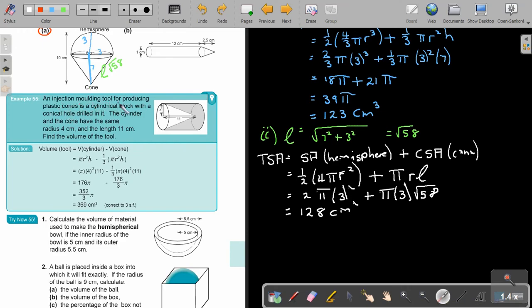An injection molding tool for producing plastic cones is a cylindrical block with a conical hole drilled in it. The cylinder and the cone have the same radius, 4, and the length is 11. Find the volume of the tube. So, it's just the volume of the cylinder, because that is the metal, minus the volume of the cone. And that's all that I do, and I substitute, and I get the answer. Okay, again, I want you to stop the video, and I want you to do number 1. You can continue the video as soon as you are finished.